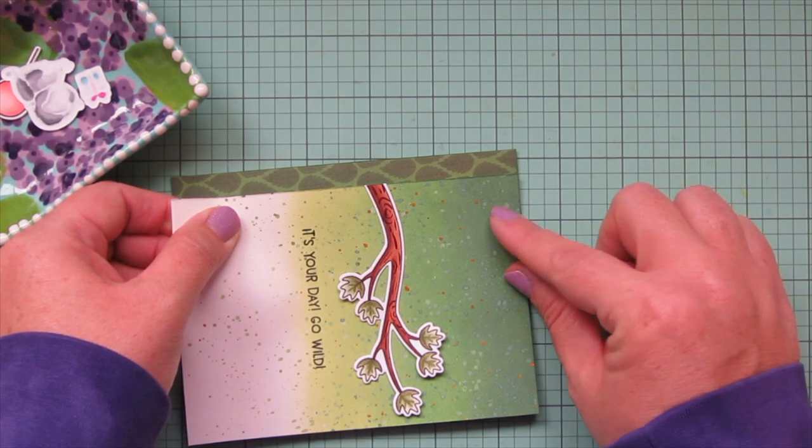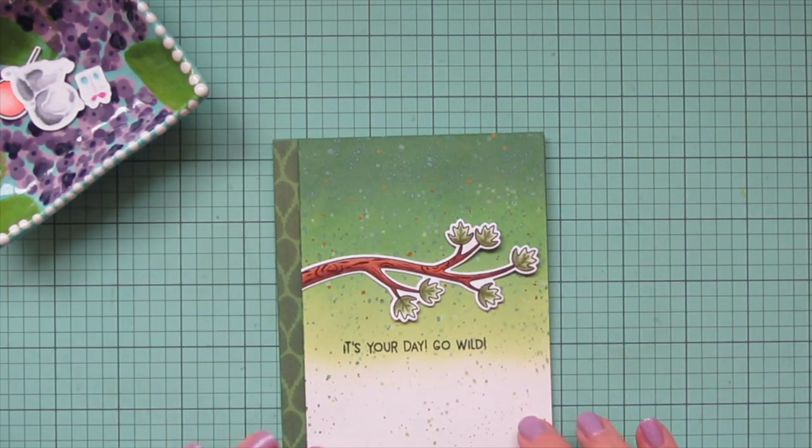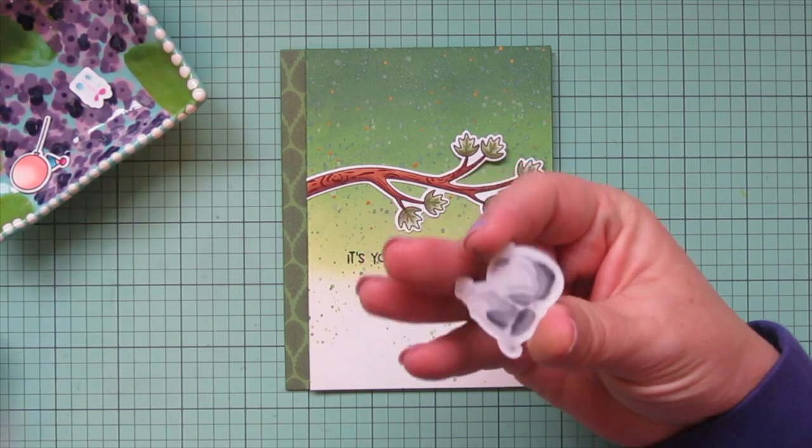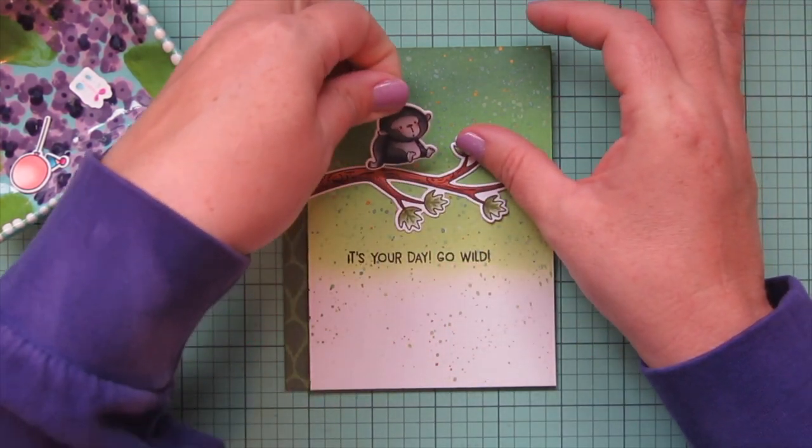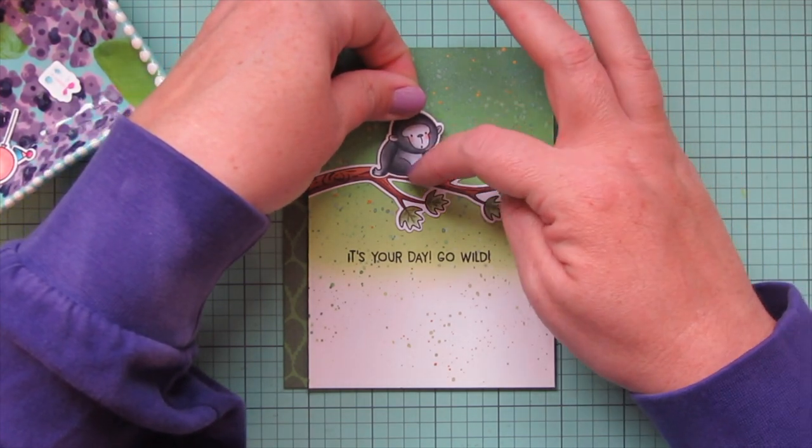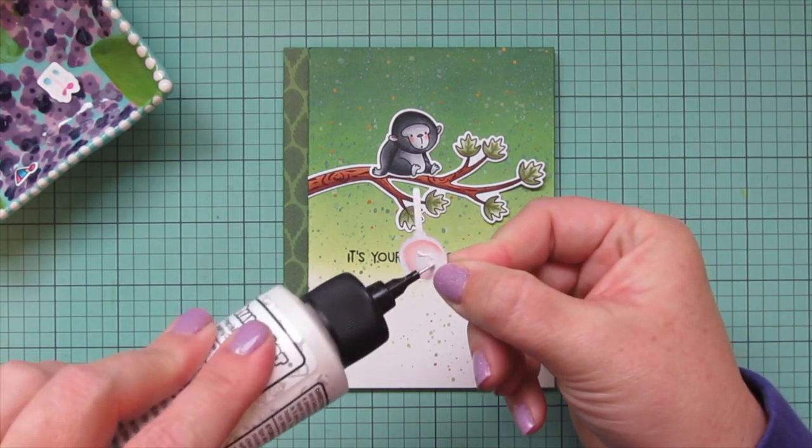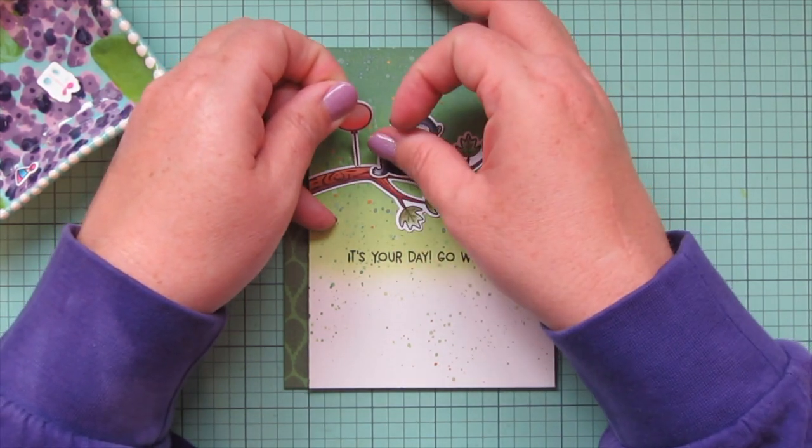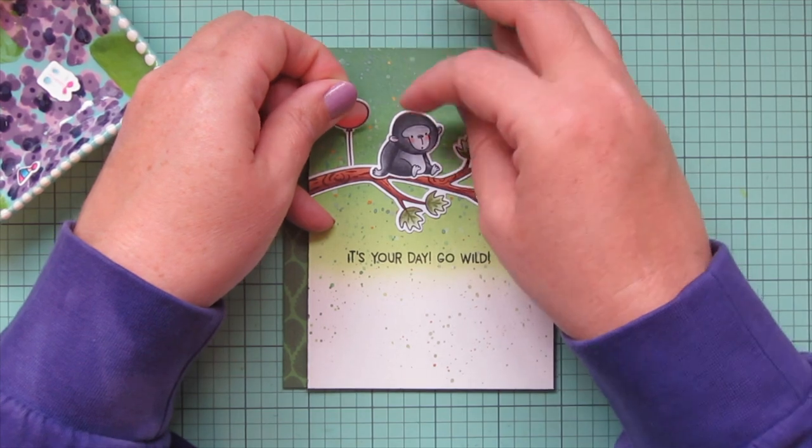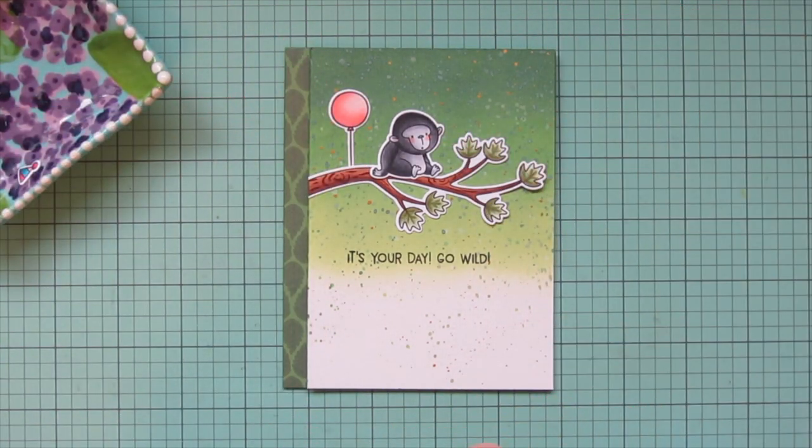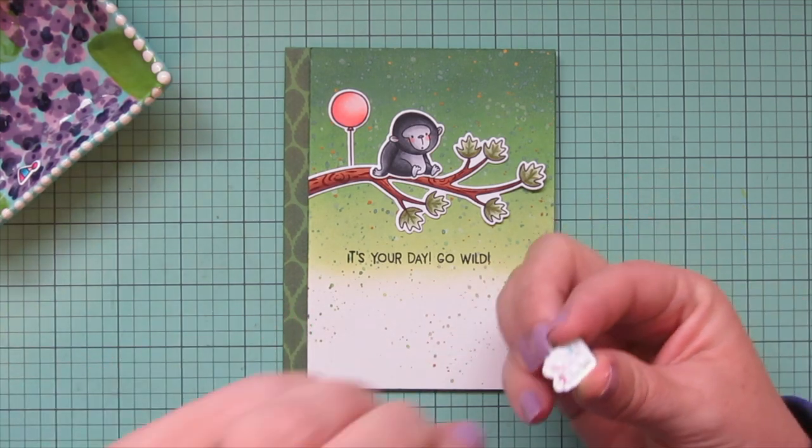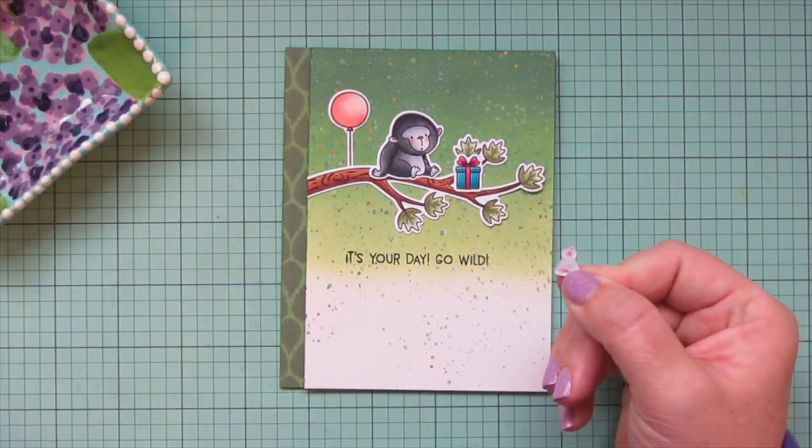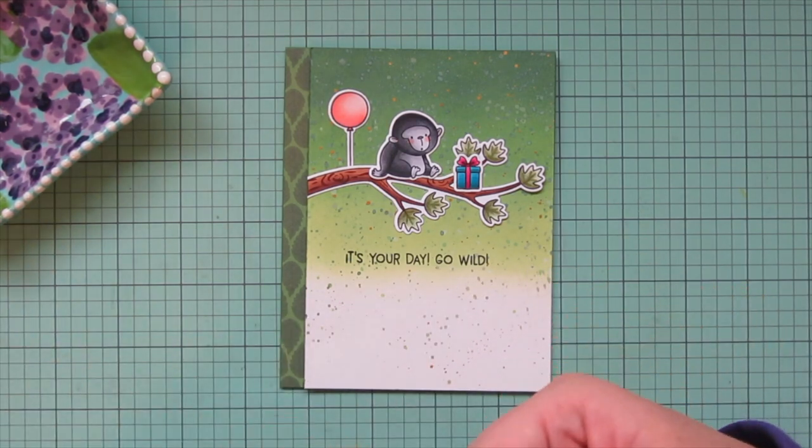So once that's all attached I can start to adhere the rest of my images. I'm going to begin with my gorilla since everything is kind of going to be placed around him so I want to get him positioned where I want him first so that he's sitting kind of in the middle of that branch and then behind him I'm going to add the balloon and I wanted that to be tucked behind at the bottom there so I just kind of wedged up the edge of that tree branch with my fingernail and then tucked that behind and then the little gift I'm going to add out to the branches in front of him as if he's just set it there waiting for his friend to come for a little surprise birthday party that he's throwing and then I gave him a party hat as well.